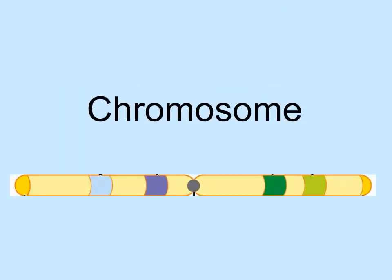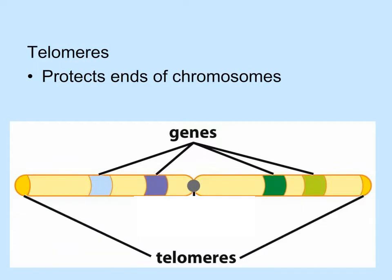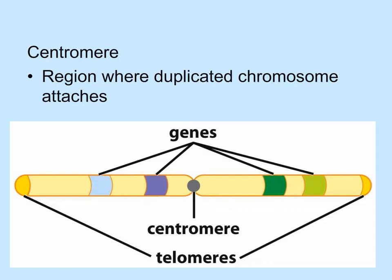Let's look at the basic features of eukaryotic chromosomes. Genes are found in a specific sequence along the chromosome and contain the instructions for how to make certain products. Telomeres are structures that protect the ends of the chromosome. When chromosomes duplicate, they attach to each other in a region called the centromere.